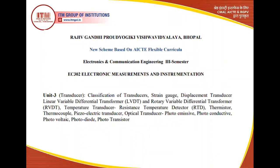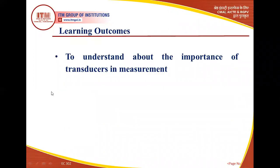Our third unit, as per RGPV, is Transducers. In this unit, we will see that different types of transducers exist — LVDT, RVDT, temperature transducers, pressure measurement transducers, photosensitive transducers, and weight measurement transducers. The learning outcome of this unit is that we will understand what transducers are, what types exist, what their uses are, and where their applications are.